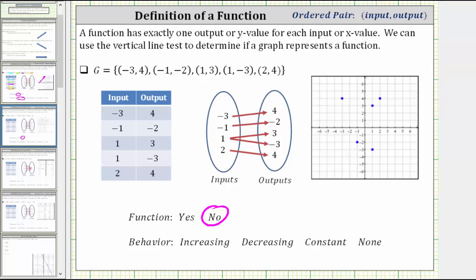If we look at this graphically and plot the five ordered pairs on the coordinate plane, notice the graph fails the vertical line test because at x equals one, there is more than one point of intersection — two points of intersection. Therefore it fails the vertical line test, and we do not have a function. Because we don't have a function, we do not describe the behavior.